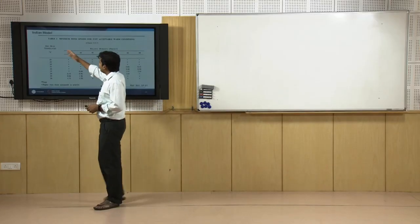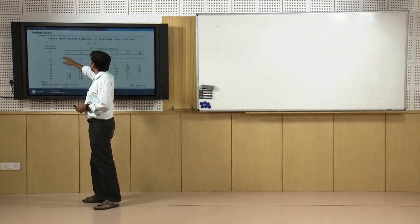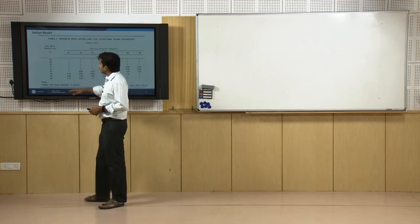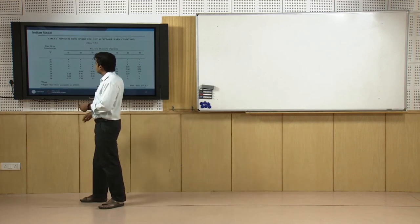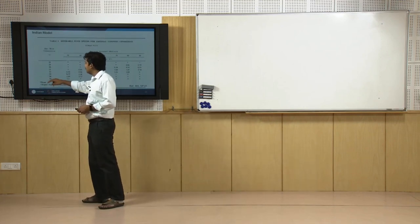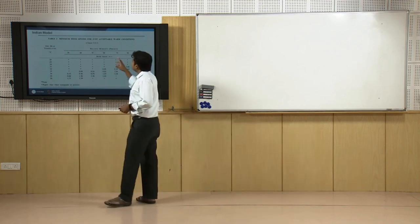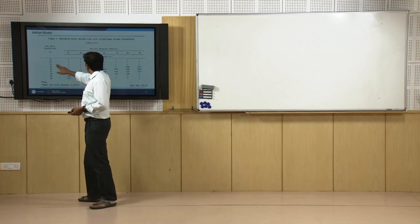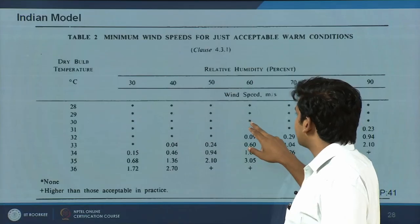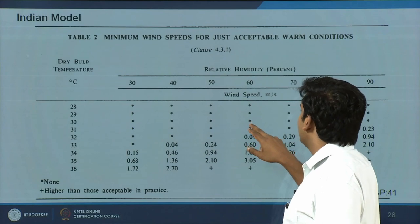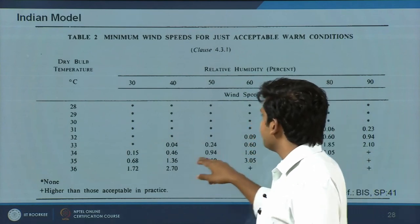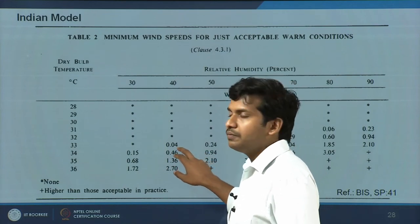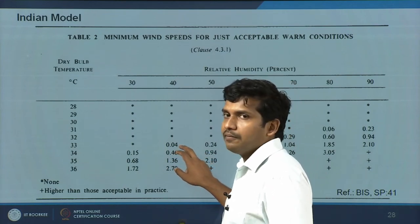A similar table shows dry bulb temperature and relative humidity, but for acceptably warm conditions — the numbers change considerably and the range extends to 36 degrees. At 30 degrees and 60% relative humidity it is acceptable with no air velocity needed. Even at 33 degrees and 40% relative humidity, without much air movement you can still be comfortably warm.